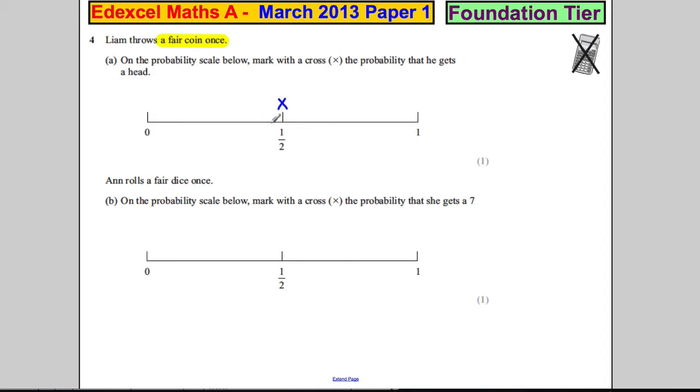Ann rolls a fair dice. Now a dice has six sides, and it's important we're thinking about the dice rather than the coin because it's easy to make a simple mistake.